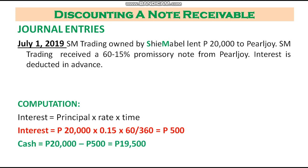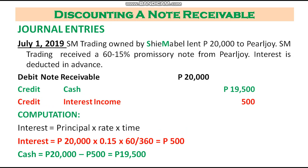Since 500 pesos interest is deducted in advance, the cash we give to Pearljoy is only 19,500 pesos — the 20,000 loaned minus the 500 interest. The journal entry is: debit notes receivable 20,000, credit cash 19,500, credit interest income 500. Note that the interest account here is interest income, because we received the note — making it a notes receivable — and since it is interest-bearing, we earn interest income.